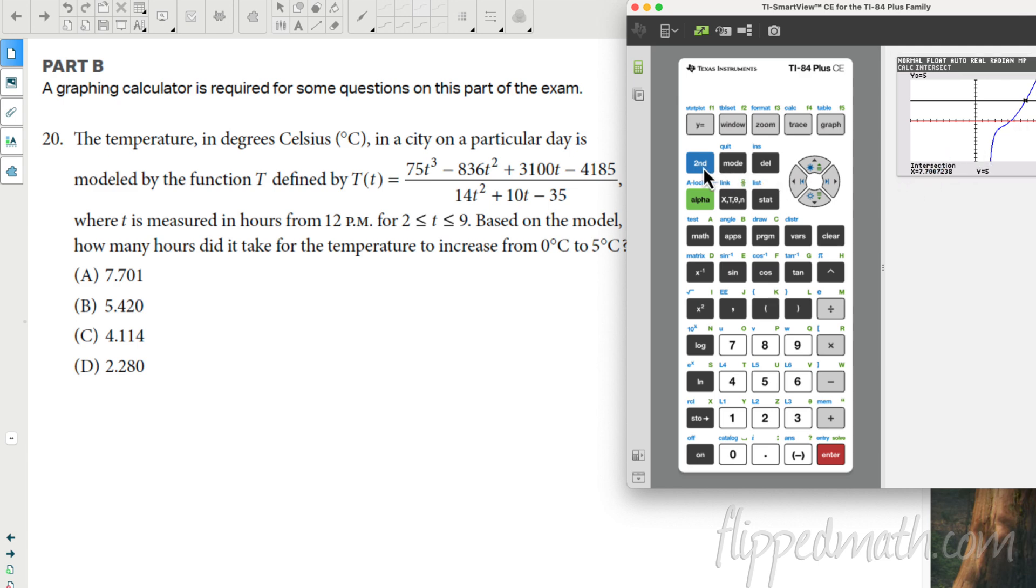Notice it's a new X value. Now before X was 5.4, now X equals 7.7. So what I can do is I can quit. And if I want to, I can store X now into like alpha B. Now that would be the bigger value, right? So I just need to, you know, you can do this. You can go alpha B minus alpha A, and that should be one of the choices. Please be one of the choices. 2.280. There we go. Choice D.